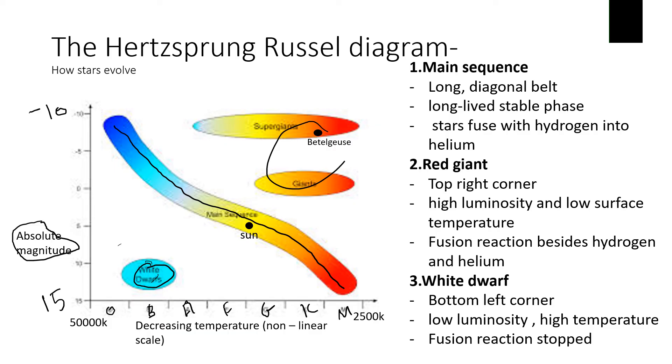Up here, these big stars up here, they have a huge power output, but at low temperature. And that's why we know that they're big. You can see the sun here.